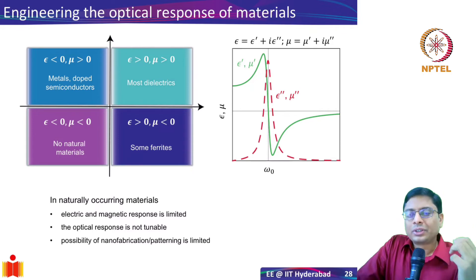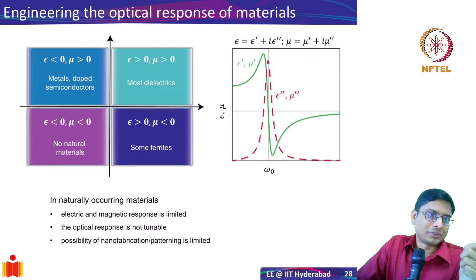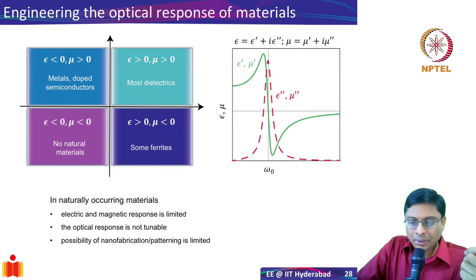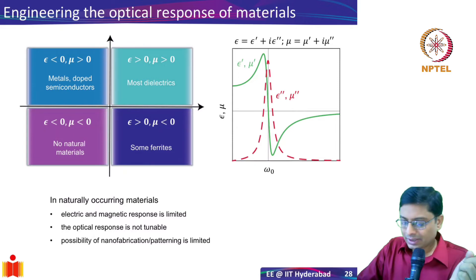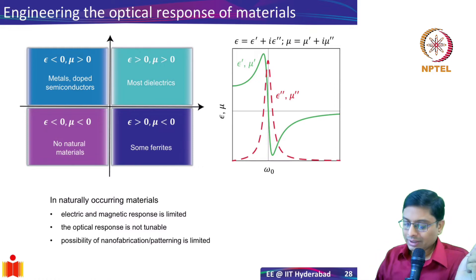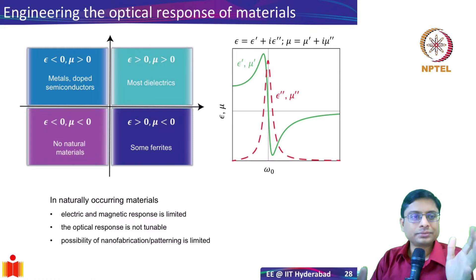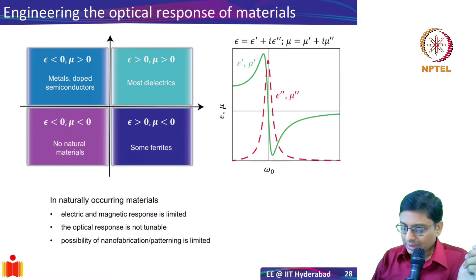One of the key goals of nanophotonics is to design the optical response in the way you want it. To do that, we first need to understand the landscape of available materials. I'm plotting epsilon on the x-axis and mu on the vertical axis.